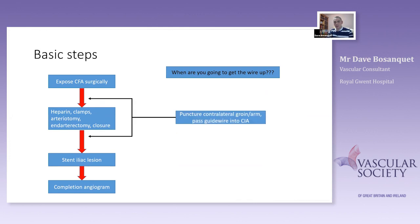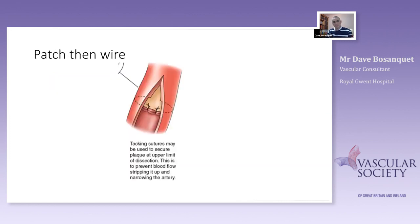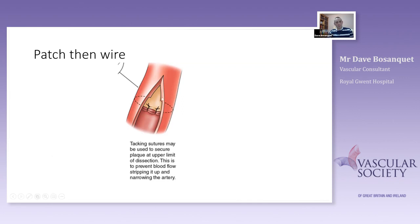The issue with patch-and-wire is that when passing the wire up you will hit the dissection plane. In a common femoral endarterectomy — unlike a neat carotid endarterectomy — the disease is always posterior, you grab it and yank it out, it's ragged, and you can't necessarily see it. The problem with puncturing the patch and threading the wire up is finding the true lumen at that dissection plane.